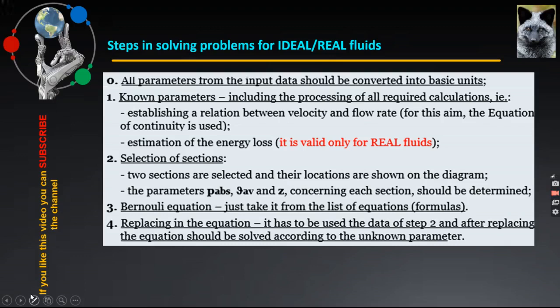For the case of real fluids, there is another action that has to be done here, which is the estimation of the energy loss — but this is valid only for the case of real fluids. The second step is the selection of sections, where two sections are selected and their locations are shown on the diagram. The parameters — absolute pressure, velocity, and geodetic height — concerning each section should be determined. Step 3 is to take the Bernoulli equation from the list of equations. The last step 4 is replacing in the equation the data of step 2, after which it should be solved according to the unknown parameter.